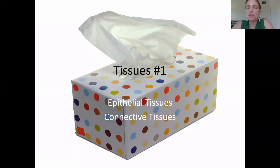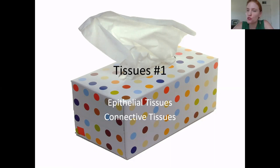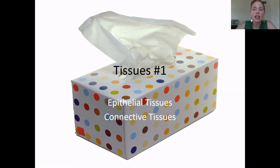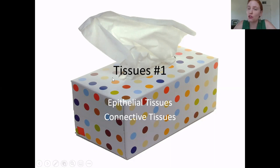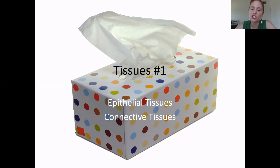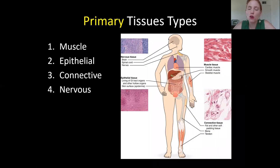Now we are moving on to tissues. Last time we talked about cells, so we're moving up the hierarchy — smaller things come together to make bigger things. A tissue is a group of cells with a particular function. We're going to talk about different types of tissues.